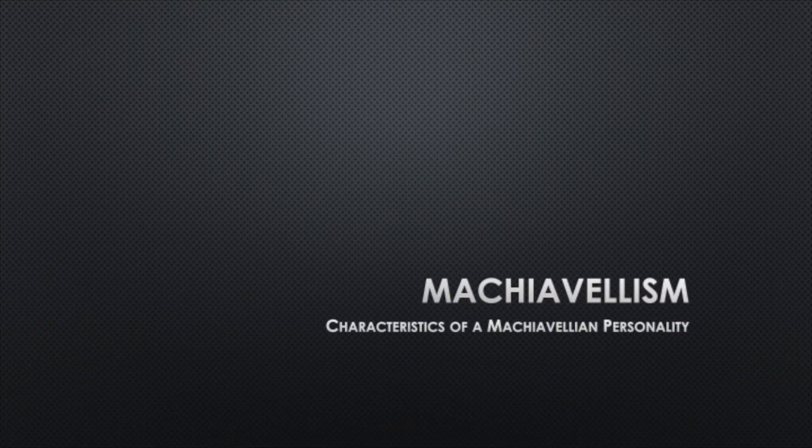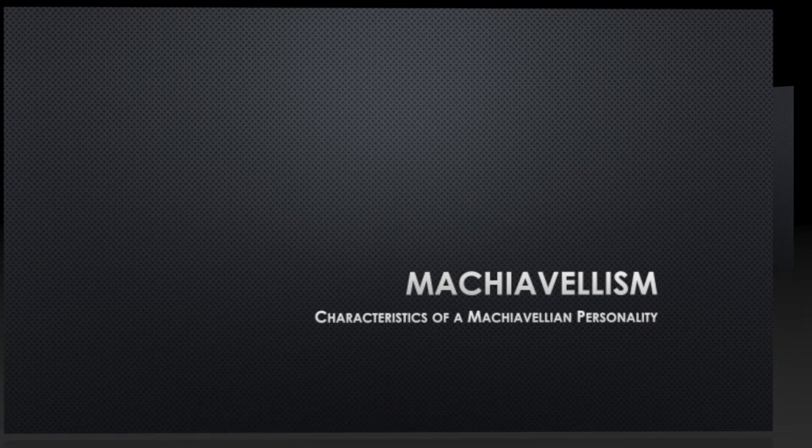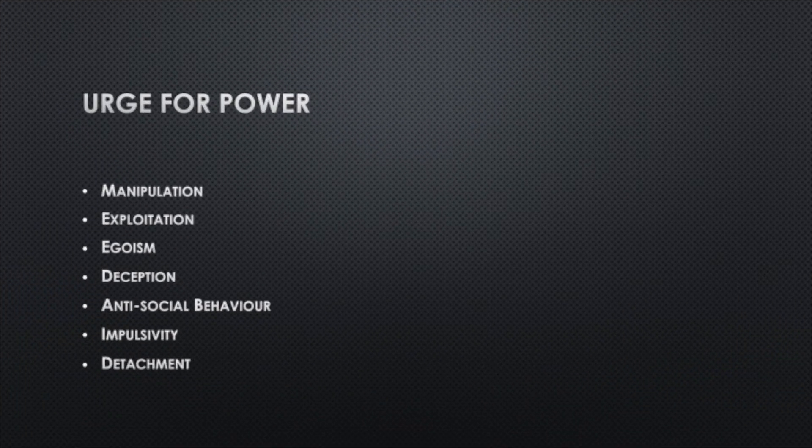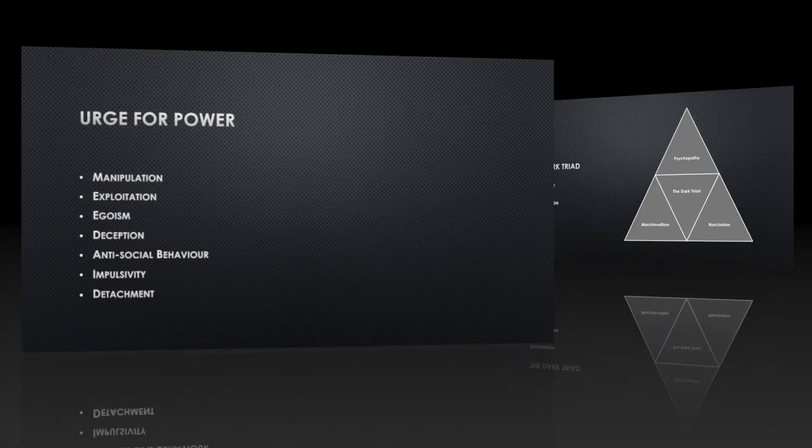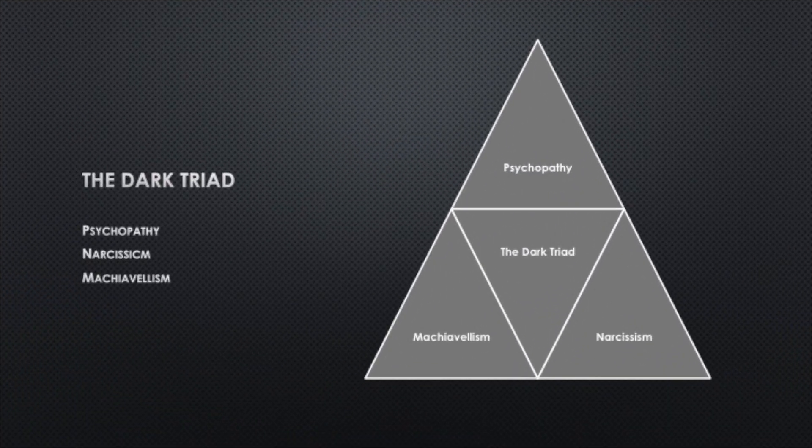The last in this category is Machiavellianism. Basically Machiavellists do have an urge for power so they want to get in charge. They want to have power and they get it usually with manipulation, exploitation, deception, antisocial behavior, impulsivity and detachment as well as egoism. So all three personality disorders, Machiavellianism, Narcissism and Psychopathy together have formed the dark triad in the research.